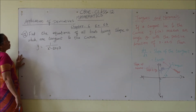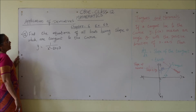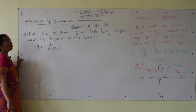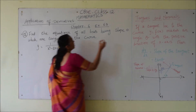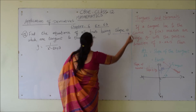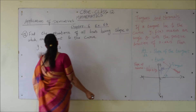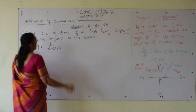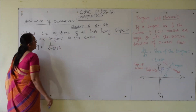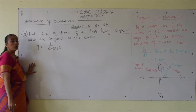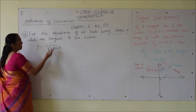Problem number 12: find the equations of all lines having slope 0 which are tangent to the curve y equals 1 divided by x squared minus 2x plus 3.